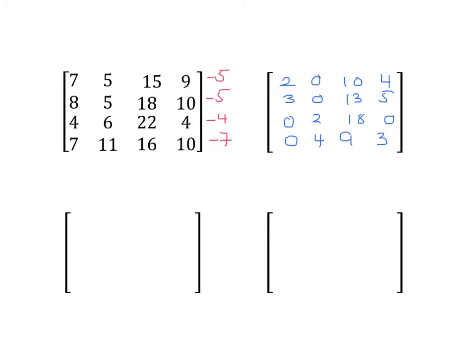At this point we check, do I have a 0 in every row and every column? And I don't. So I need to continue using my Hungarian algorithm. The next step is to subtract the smallest number from every column. The first and second columns have 0s, so those numbers aren't going to change. The third column, the smallest number there is 9. So I'm going to subtract 9 from everything there. And the last column, the smallest number is 0, so nothing is going to change. First column, 2, 3, 0, 0. Second one, 0, 0, 2, and 4. And the final column, 4, 5, 0, 3. Now subtracting 9 from that third column, I end up with 1, 4, 9, and 0.